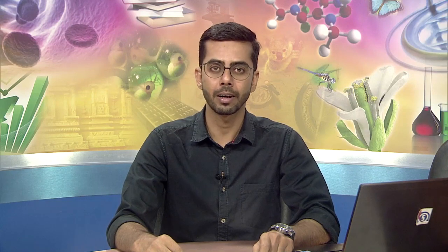We are already aware that three types of matter exist: gases, liquid, and crystalline solid. Gases exist due to the fact that the spacing between the intermolecules is very large. Therefore, they do not have a definite shape and size.